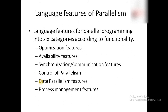The next topic is language features of parallelism — what features a language should support or possess if it is a parallel language or if it is used for developing parallel programs. There are six categories, or six features, which a parallel programming language should possess, as listed in this slide.